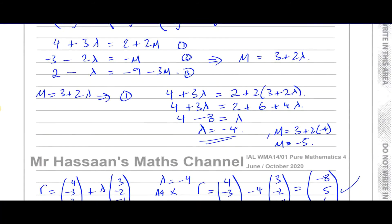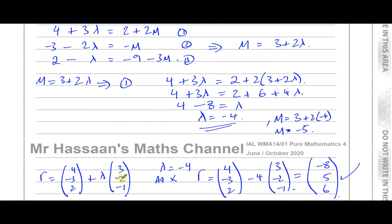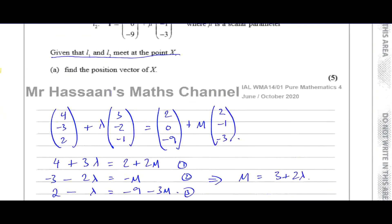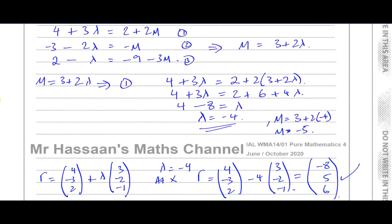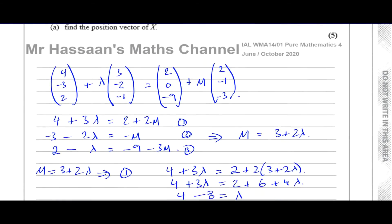Since the question told us they intersect rather than asking us to prove it, once I found lambda I could go straight ahead and find the position vector of X. That's the answer for part A — the position vector of X is (-8, 5, 6).